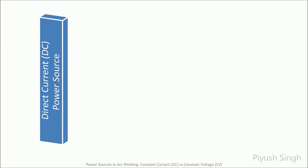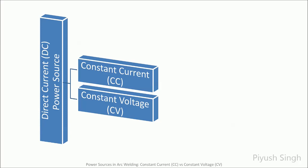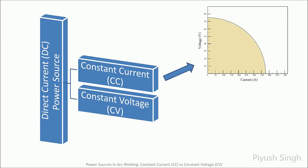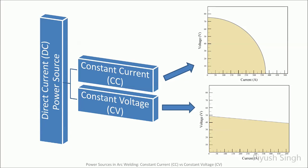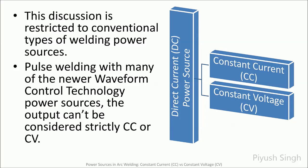Direct current power sources can be classified as constant current and constant voltage power sources. A welding arc is dynamic in nature, in which current and voltage change constantly. The power source monitors the arc and makes millisecond changes in order to maintain a stable arc condition. Hence, the term 'constant' is relative. Modern pulse welding power sources can vary output based on process requirements and cannot be classified as truly constant current or constant voltage. This discussion will be restricted to only conventional welding power sources.